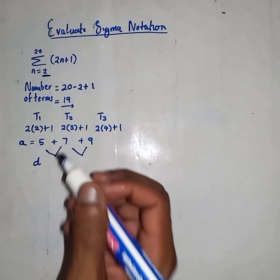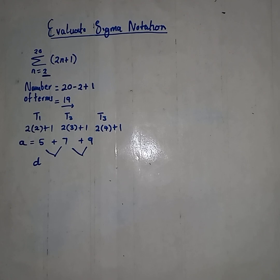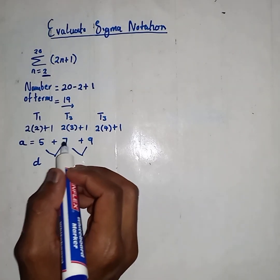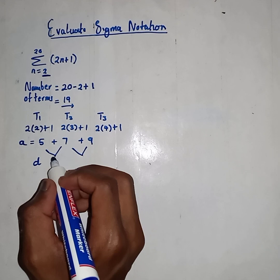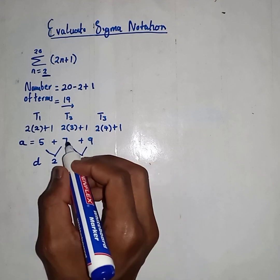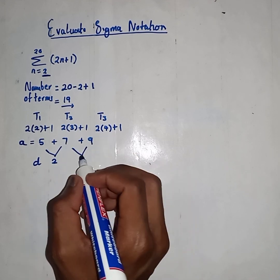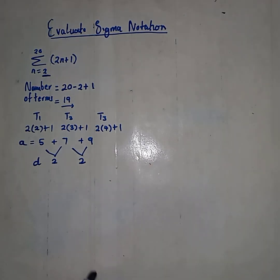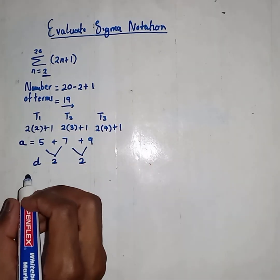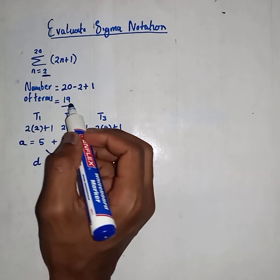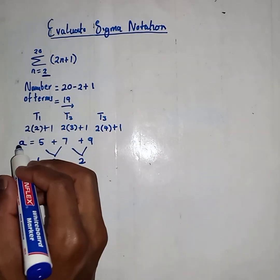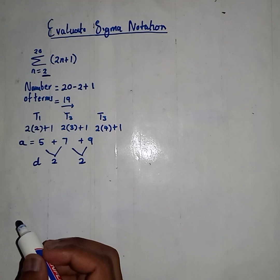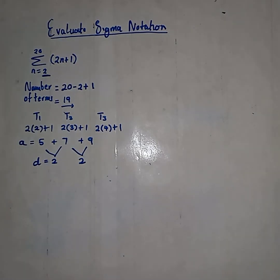To figure out the value of D, we say 7 minus 5 and get 2. Then 9 minus 7, same — we get 2. Now we have our N value, which is 19; A value, which is 5; and D, which is 2.